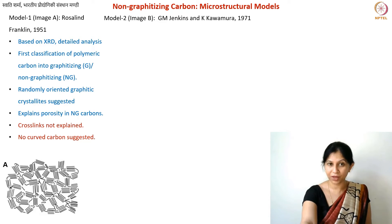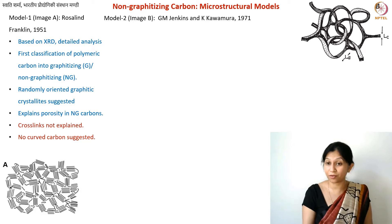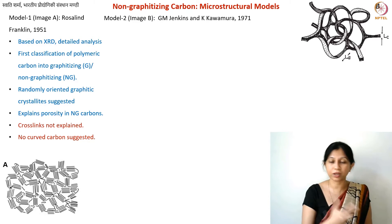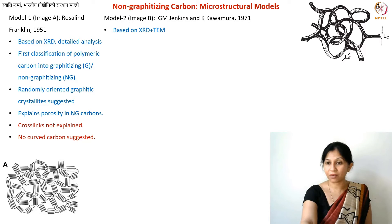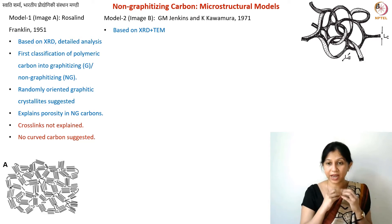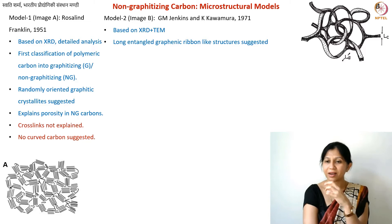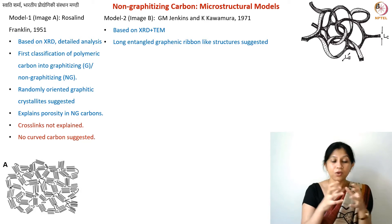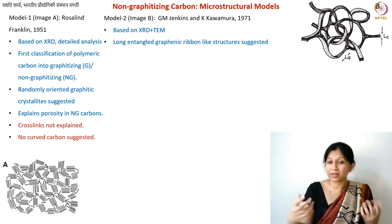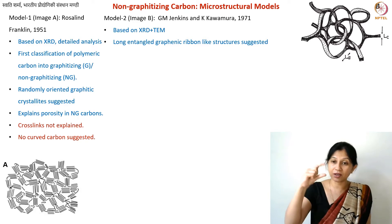In the 1970s came the second model, which also became very popular and which many people still refer to when talking about non-graphitizing carbon. This model was proposed by Jenkins and Kavamada, based on both X-ray diffraction and TEM. They interpreted TEM images and XRD data together to arrive at this model. What they suggested was that you have long ribbon-like structures — long entangled graphene-like ribbons, as you can see in image B — with a certain stack thickness, Lc.